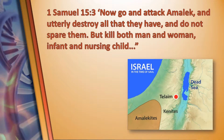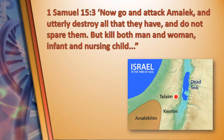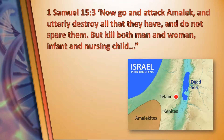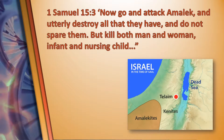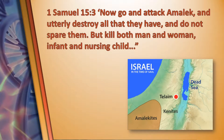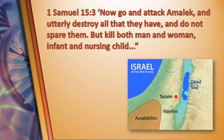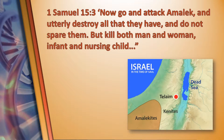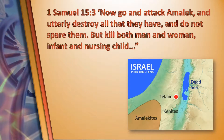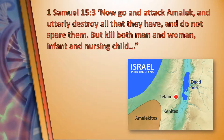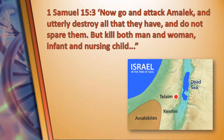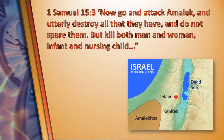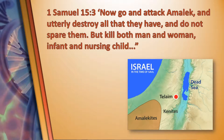In 1 Samuel 15:3, we see an example of a passage typically quoted along with this question, where God commanded, 'Now go and attack Amalek, and utterly destroy all that they have, and do not spare them, but kill both man and woman, infant and nursing child.' Without context, we can admit this seems like a horrible command from God. So understanding the context of this and other similar passages is very important to dealing with this question.